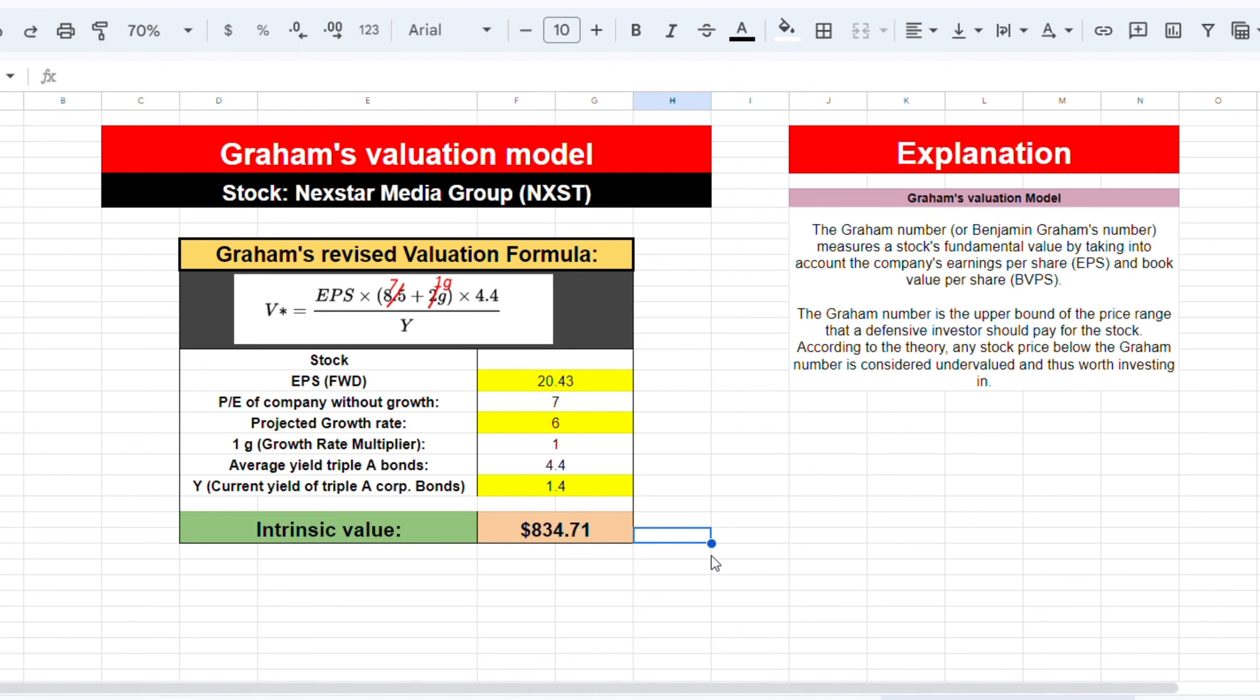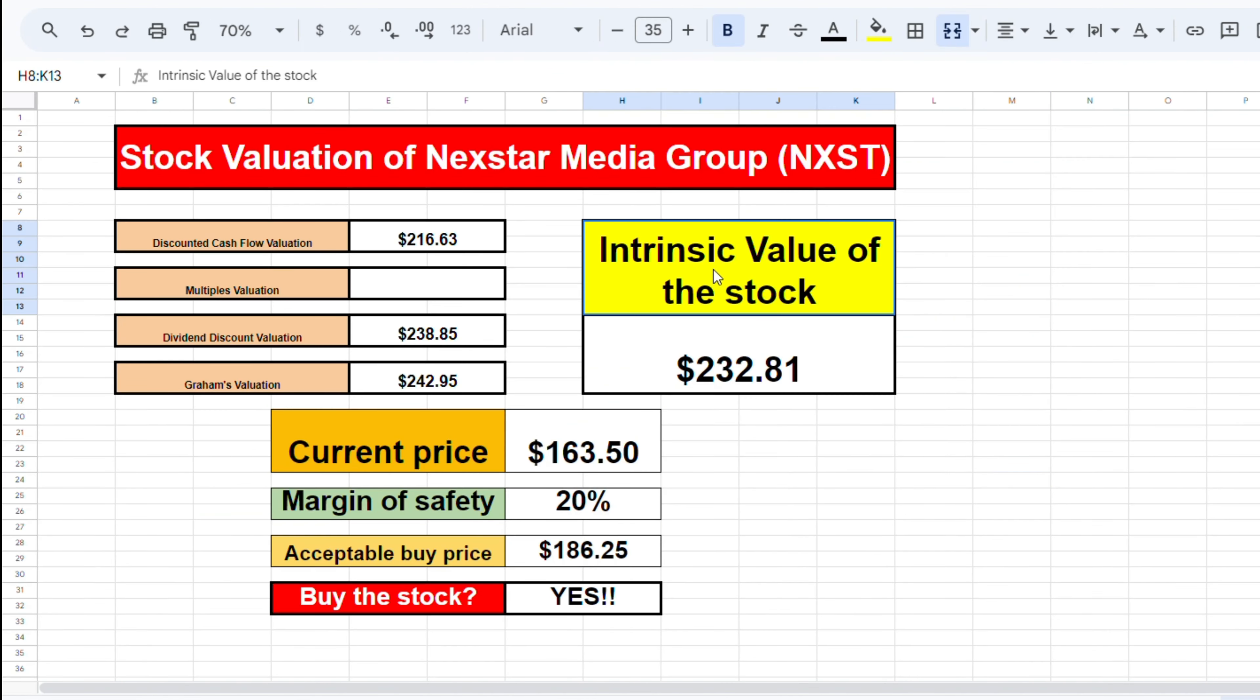When we put all the used valuation models together, we come to a price per share of $232.81. With a current price of $163.50, this would be a great moment to buy. Even when we use a margin of safety of 20%, suggested by Benjamin Graham, we come to an acceptable buy price of $186.25, which is also well above the current price.